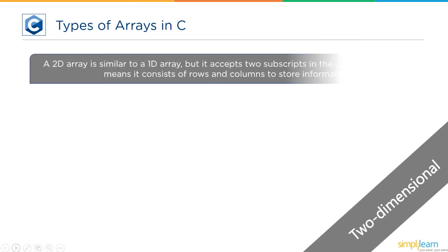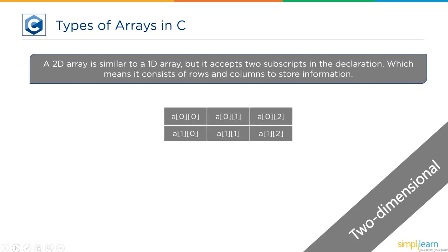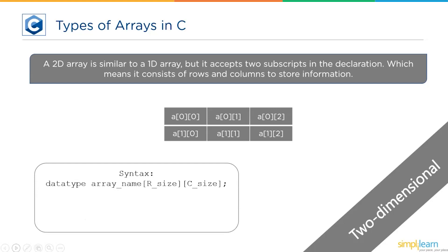Next, we have two-dimensional arrays. A 2D array is similar to a one-dimensional array but it accepts two subscripts. In a 2D array, the data is stored in rows and columns, so we can perform matrix arithmetic operations like addition, subtraction, multiplication, etc. The index of the 2D array starts with [0][0], then [0][1], [0][2], followed by the next row: [1][0], [1][1], and [1][2]. The syntax is: data type, array name, followed by two subscripts — the first describes the number of rows and the second the number of columns. If we have two rows and three columns, this indicates the first element is at row 0, column 0; the second at row 0, column 1; and so on.